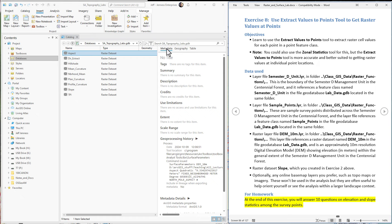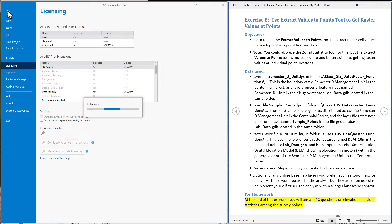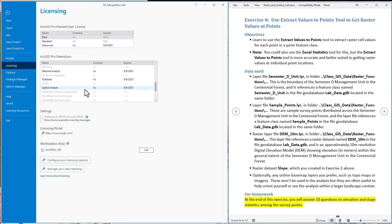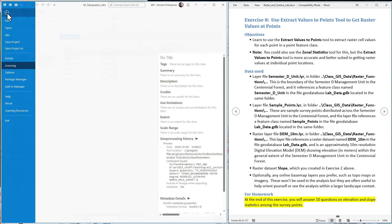So first, let's make sure the license is turned on. Just come up to the project tab here. Go down to licensing. We'll scroll down to see if spatial analyst is turned on. It is for me. If it's not for you, then you'll have to configure your licensing options and turn it on.